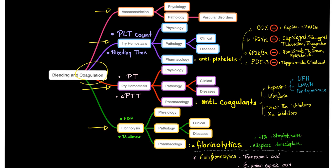Cyclooxygenase inhibitors such as aspirin and non-steroidals. P2Y12 inhibitors such as clopidogrel, prasugrel, ticlopidine, ticagrelor. GP2B3A inhibitors: abciximab, tirofiban, eptifibatide. Phosphodiesterase-3 inhibitors such as dipyridamole and cilostazole.